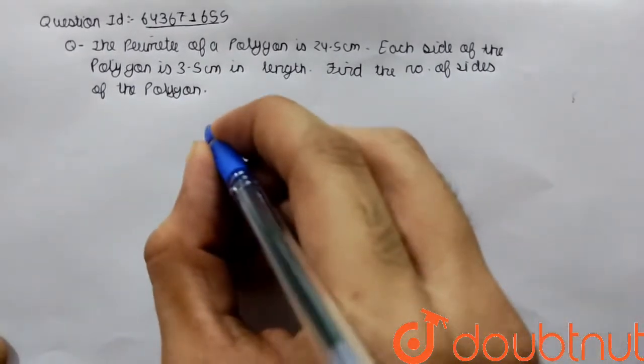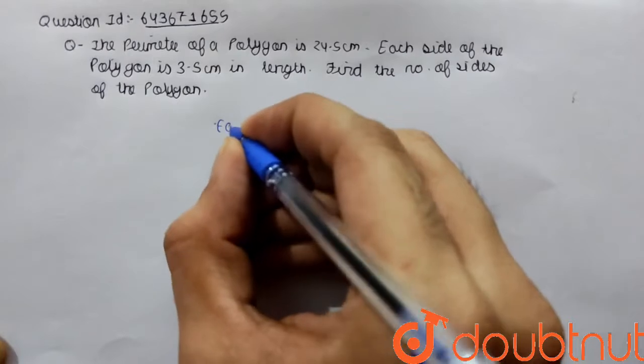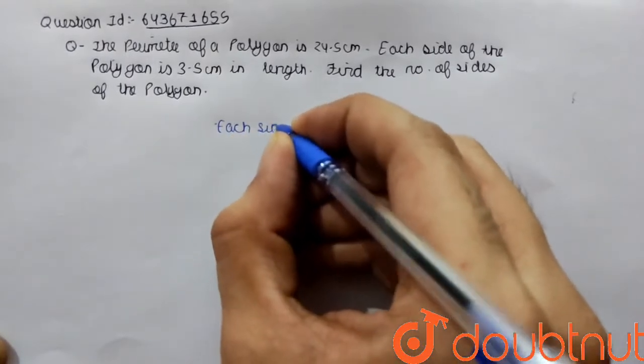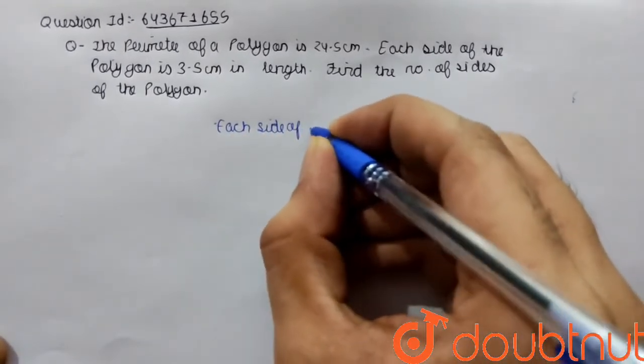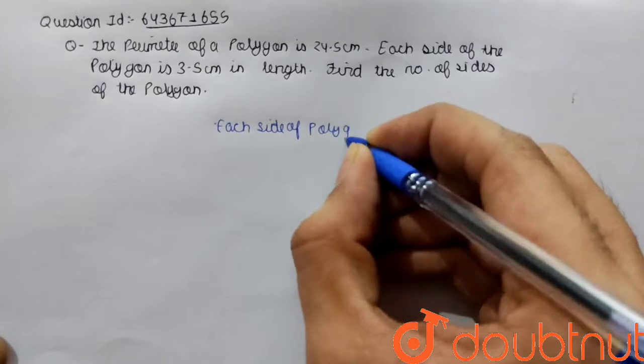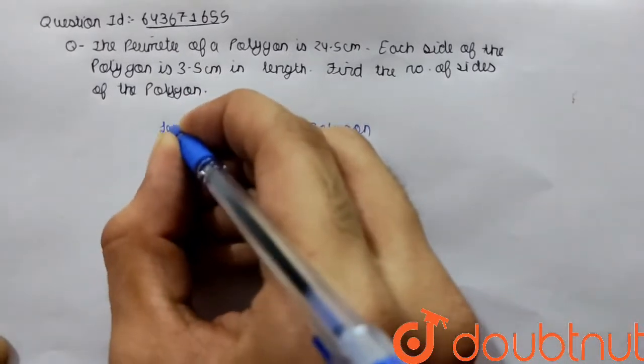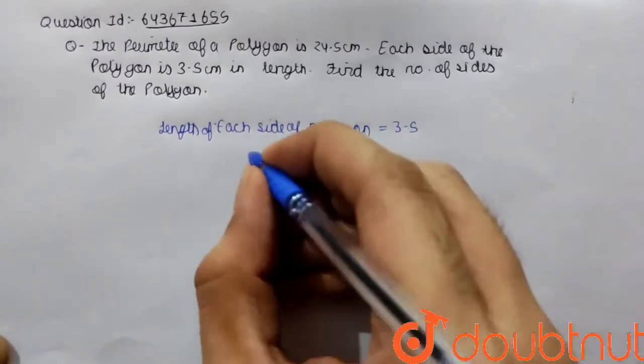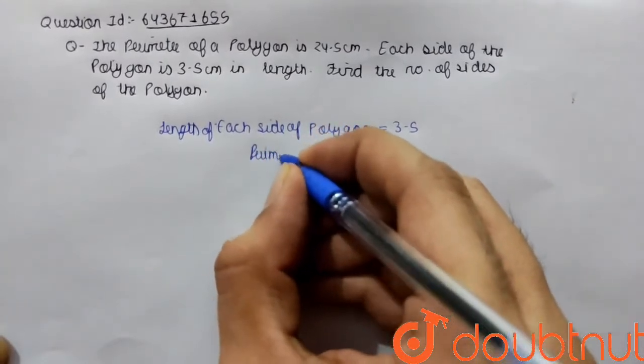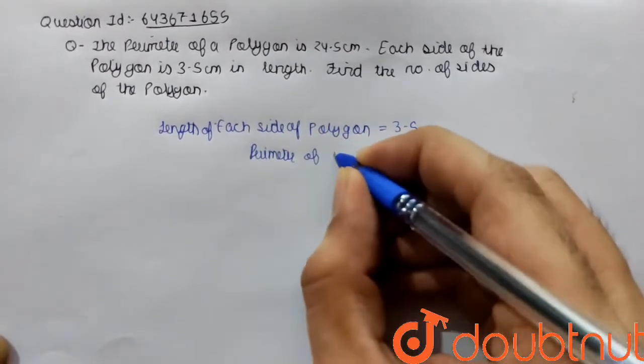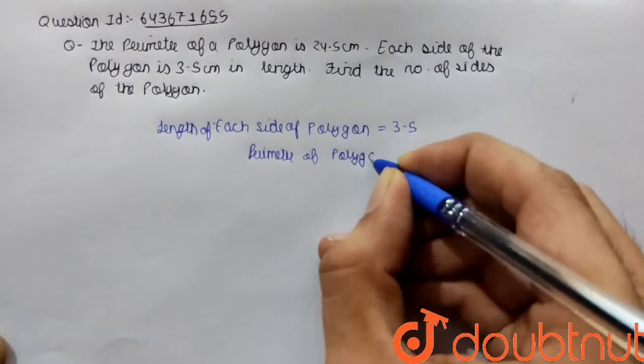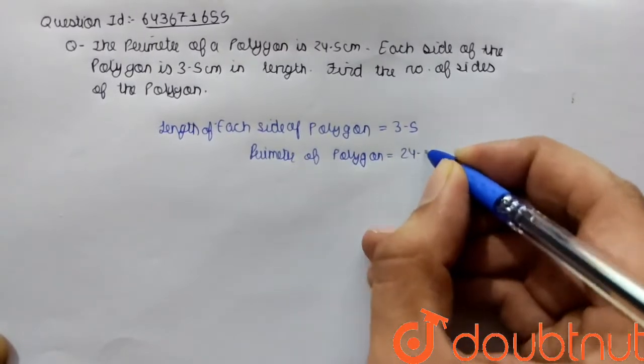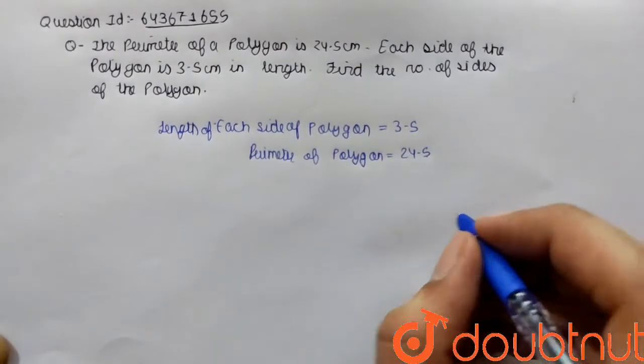So what is given? Length of each side of polygon is given as 3.5, and perimeter of polygon is given as 24.5.